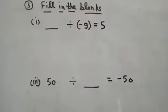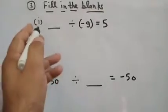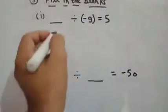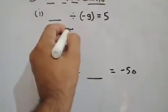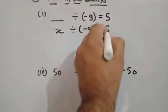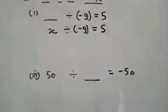So student, now question number 3. Fill in the blanks. In the first part what number is divided by minus 9 becomes 5. Let number be X, X divided by minus 9 is equal to 5.